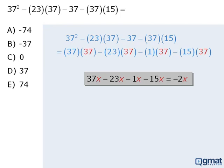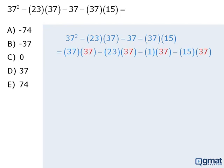We can use the same techniques to simplify our expression involving 37s. 37 37s minus 23 37s is equal to 14 37s. When we subtract 1 37 we get 13 37s. And finally when we subtract 15 37s, we get negative 2 37s.